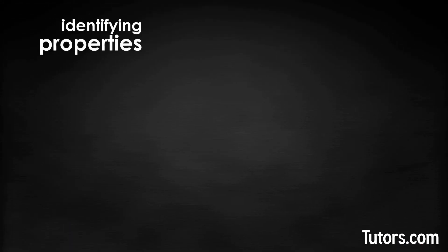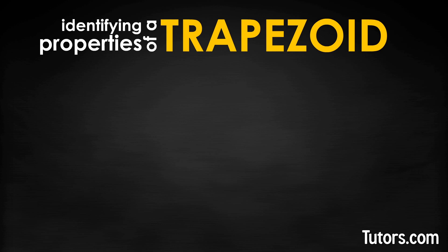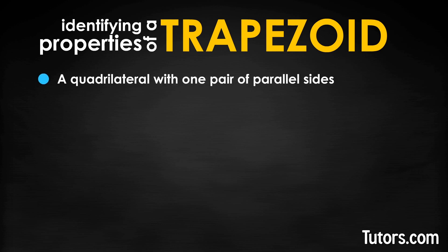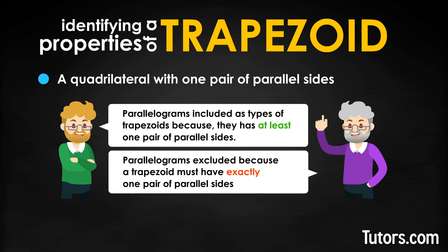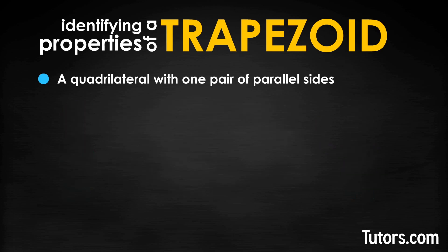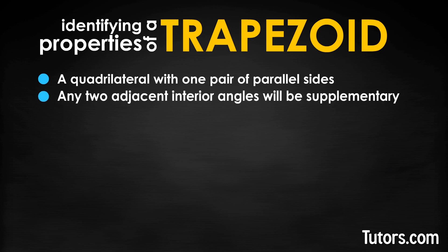Let's take a look at the identifying properties of a trapezoid. You can identify any trapezoid if it is a quadrilateral with one pair of parallel sides. Many mathematicians include parallelograms as types of trapezoids, because a parallelogram has at least one pair of parallel sides. Other mathematicians exclude parallelograms, saying a trapezoid must have exactly one pair of parallel sides. Another identifying property of all trapezoids is that any two adjacent interior angles will be supplementary — they add to 180 degrees.